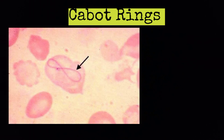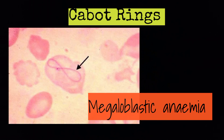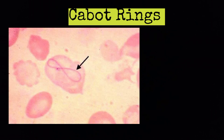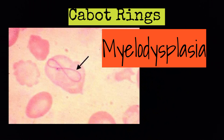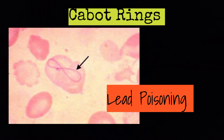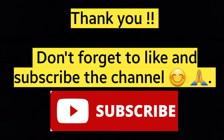Lastly, Cabot rings are present in megaloblastic anemia; medication effect is also seen, as well as myelodysplasia, pernicious anemia, and lead poisoning. I hope you find it interesting. Thank you friends.